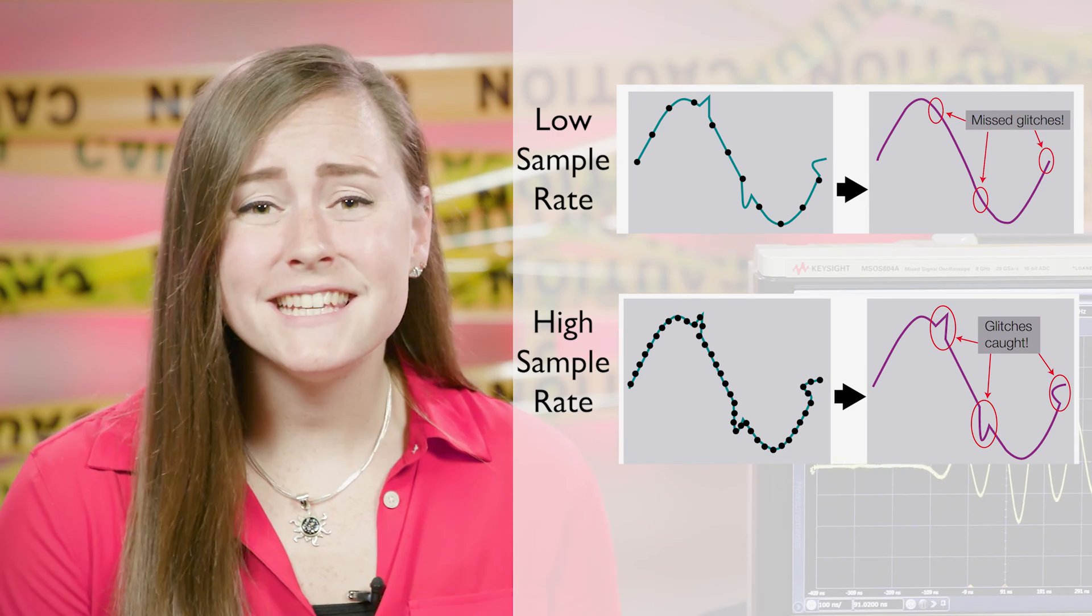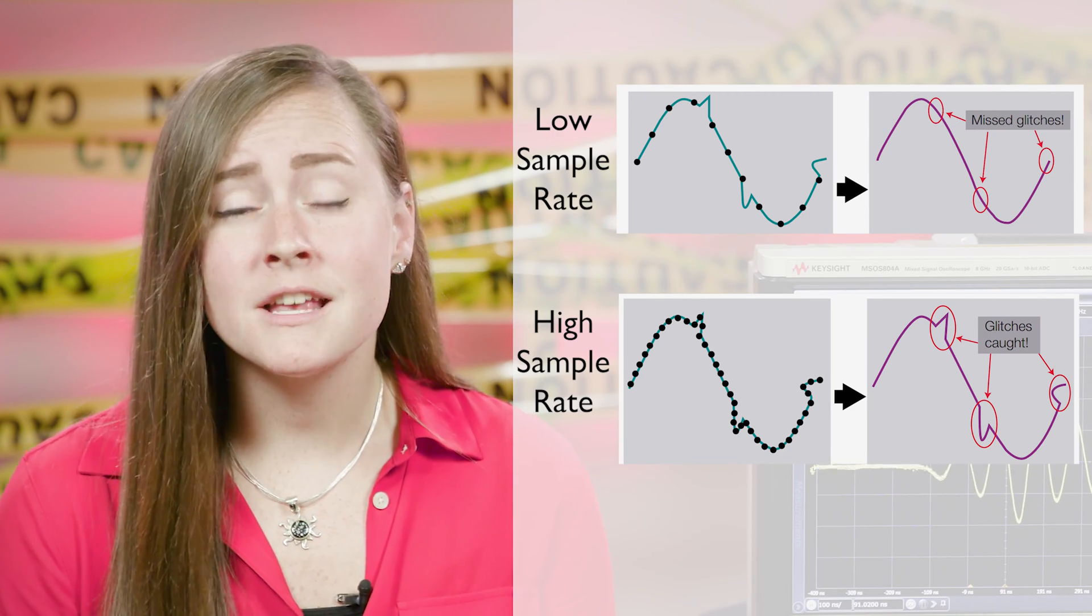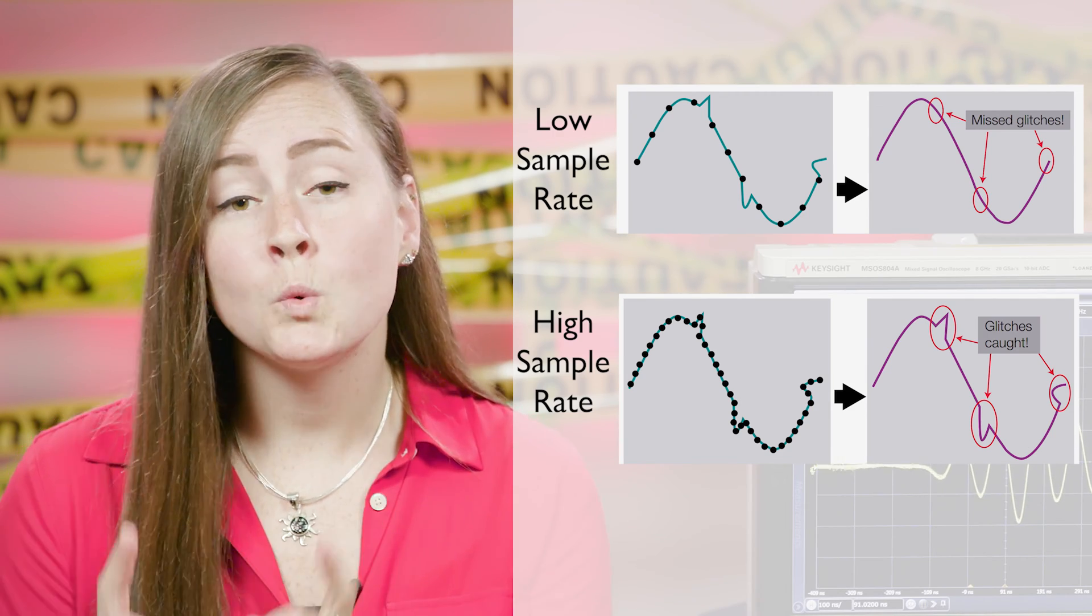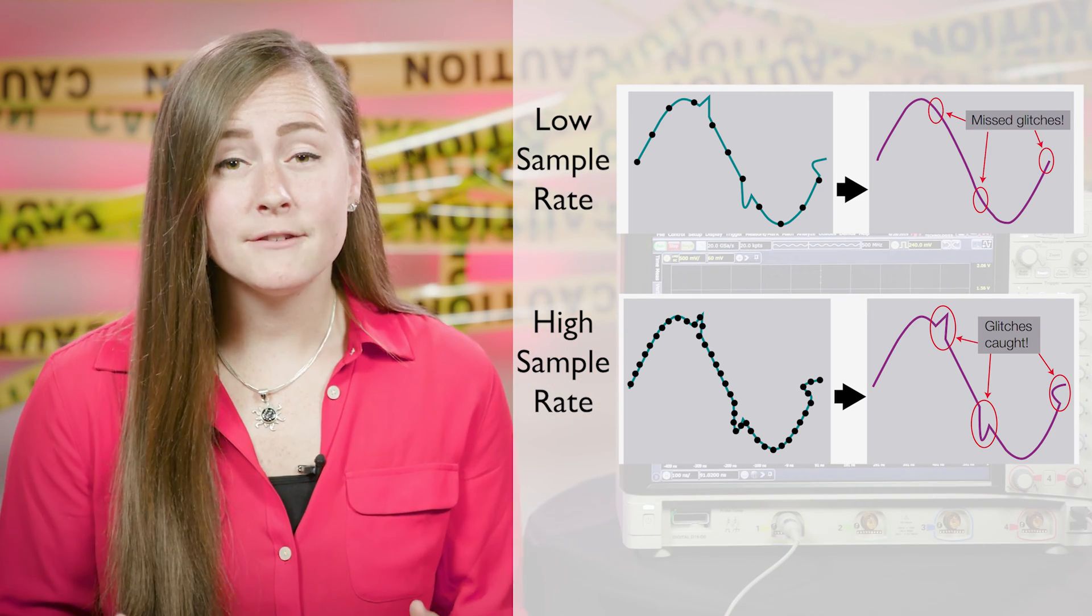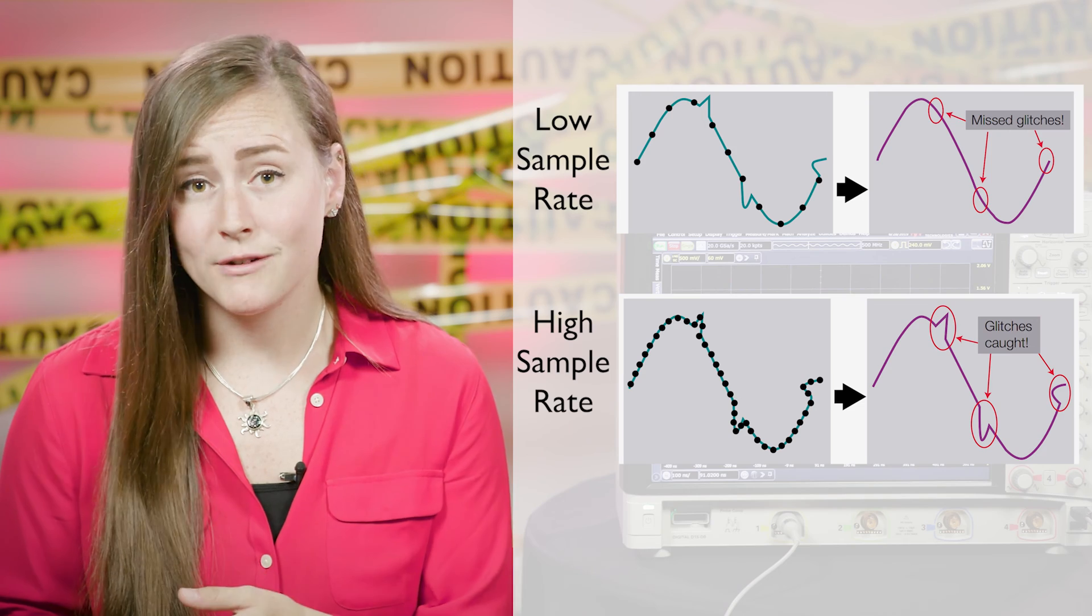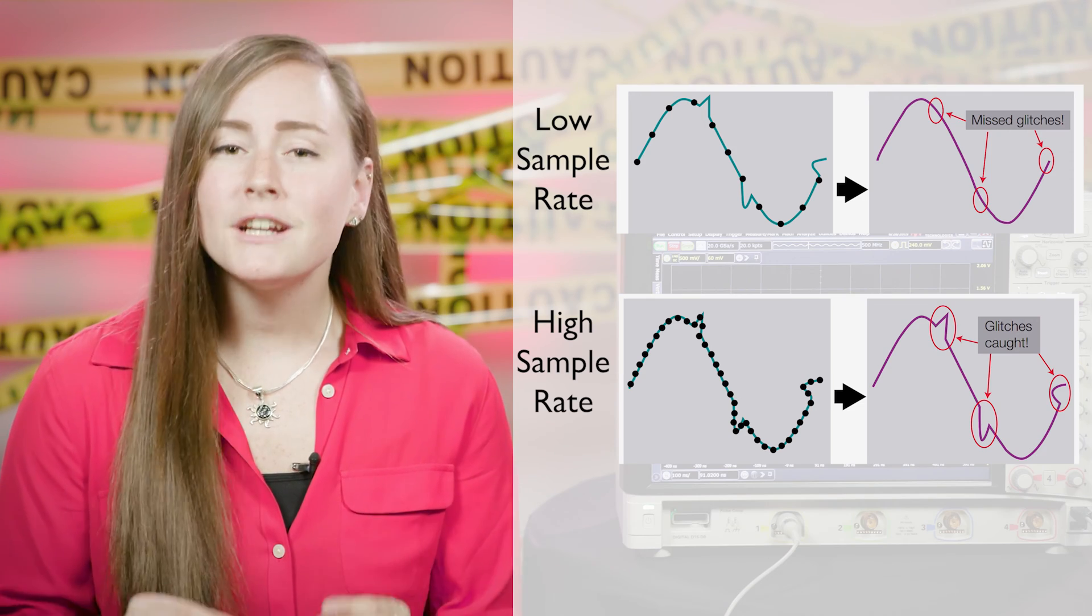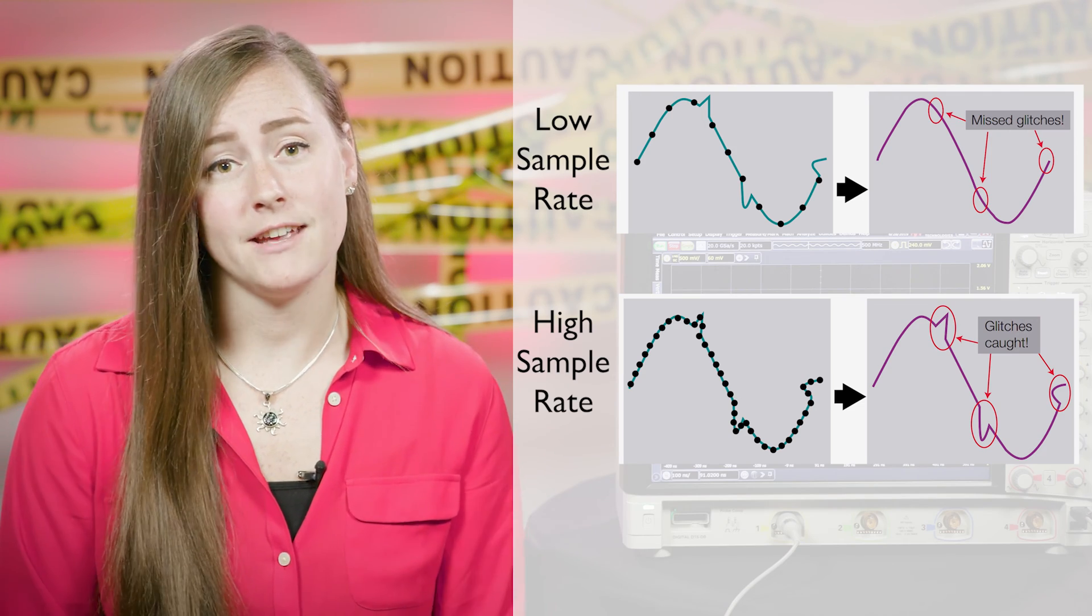Additionally, if your sample rate isn't high enough, you'll miss signal detail, glitches, or errors because elements can occur between collected samples. Since glitches and spurs can mean the difference between a device functioning correctly or not, it's critical to detect them in the design phase. Undersampling could easily cause you to think that your signal is clean when in fact it has several issues.